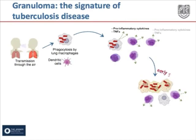These initial steps form the early granuloma, which consists of an amorphous mass of cells. During this period there is little restriction to mycobacterial growth and the bacteria grow exponentially. TB also infects dendritic cells, which migrate to the draining lymph nodes to induce an adaptive immune response.